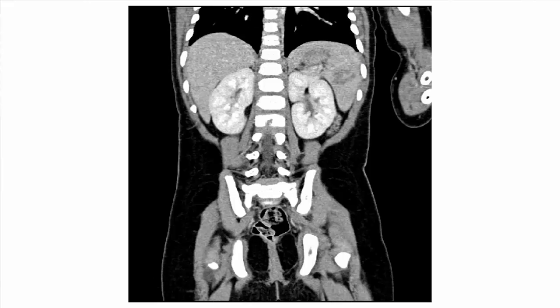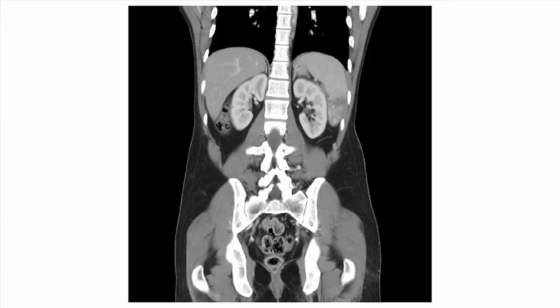Here's a central laceration that measures out at 2.2 centimeters. It's more than one centimeter deep and less than three, so by definition it's a grade two. Here's a grade three — it goes completely through the inferior pole. It's more than three centimeters in depth, so it's a grade three.